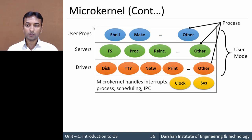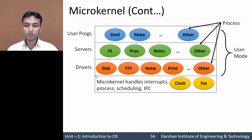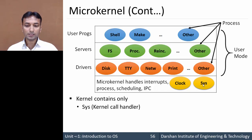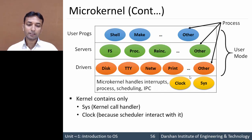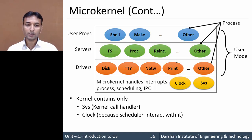In the structure of the micro kernel, all programs are divided into two portions: user mode and kernel mode. The kernel contains only two components: the system call handler and the clock, which directly interacts with the scheduler. All other processes are divided into three levels. Just above the kernel are the drivers. Above the drivers are the servers. Above the servers are the user programs.